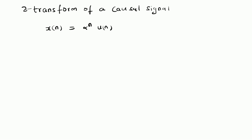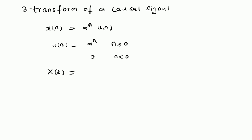This definition basically means that x(n) is equal to α^n for values of n greater than or equal to zero, and zero for n less than zero. Given this definition, we want to find its Z-transform, so by definition X(z) is equal to the summation from n = −∞ to +∞ of x(n) · z^(−n).